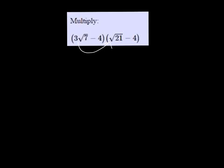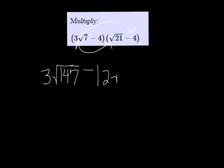Alright, we're going to multiply this out, and I'm going to do the first terms in each one. So it's going to be 3 square root of 7 times 21 — I'll pop in my calculator — it's 147. And then the outer terms are going to give me negative 12 root 7. The inner terms would be minus 4 root 7, or root 21.